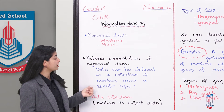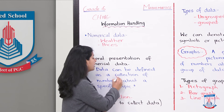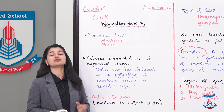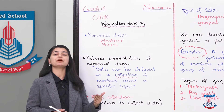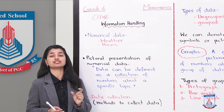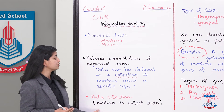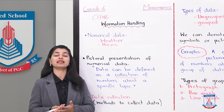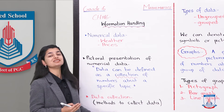Data can be defined as a collection of numbers about a specific topic. We call numbers collected about a specific topic — like information about different temperatures, or information about population — data. Data collection refers to the methods that you use to collect data about one specific topic.